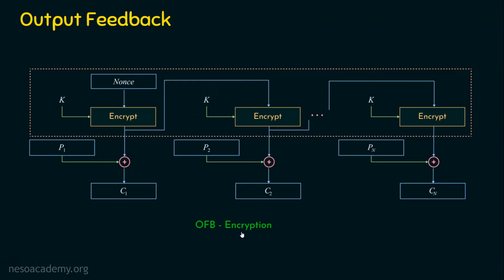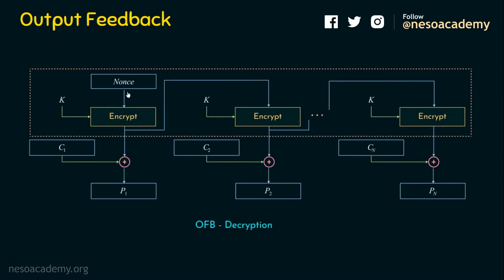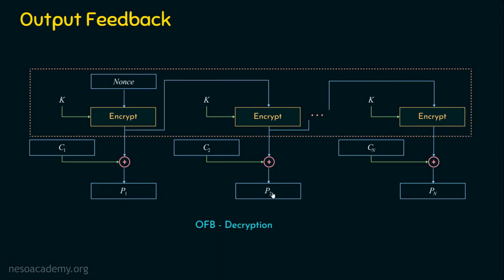This is about OFB encryption. Coming to decryption, it is straightforward. For generating the plaintext, we need the ciphertext, the same encryption function, and the key. The initialization vector nonce is also required. In OFB decryption, the same nonce is given to the encryption function with the same key, and the output is given to an XOR function with C1 in order to recover P1. Similarly, the next encryption output is used for recovering P2.